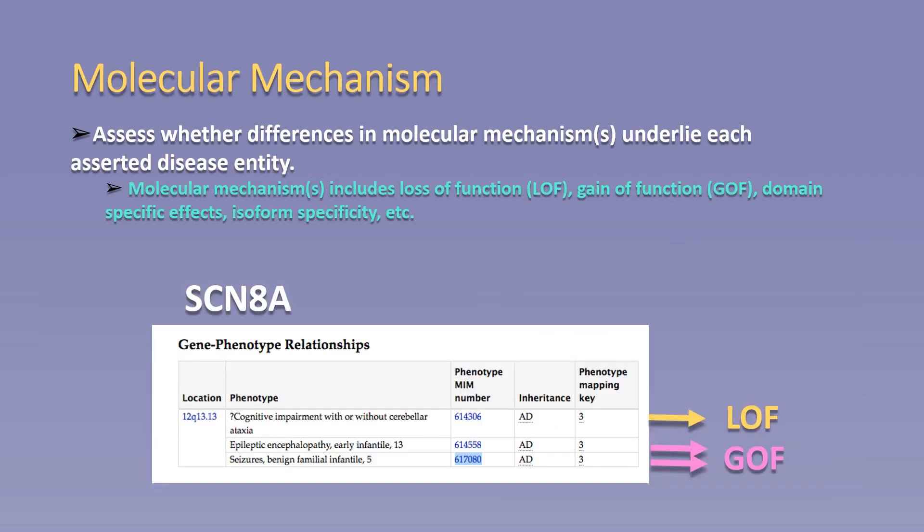The second criteria is molecular mechanism. Assessment of molecular mechanism begins at the gene level and includes differences such as loss of function versus gain of function mutations for each asserted disease entity, as observed for the example of the gene SCN8A. Other examples to consider would be domain-specific mutations or isoform-specific mutations that may occur between asserted disease entities for the gene of interest.